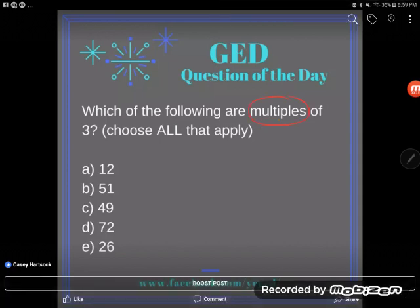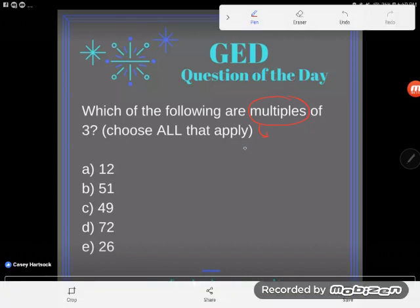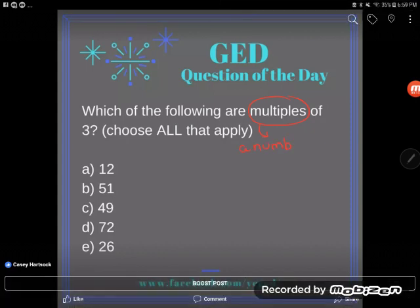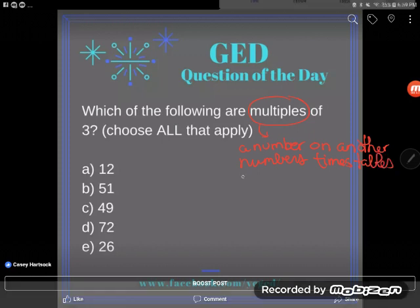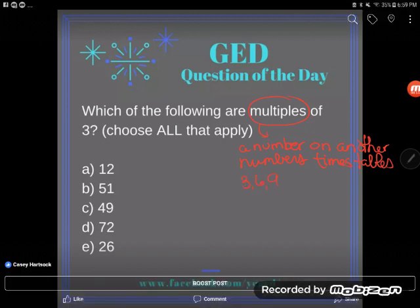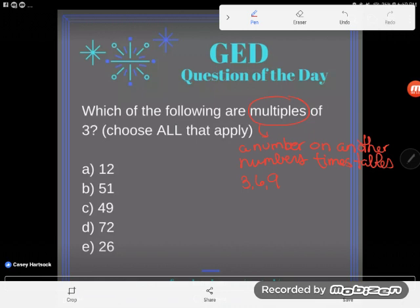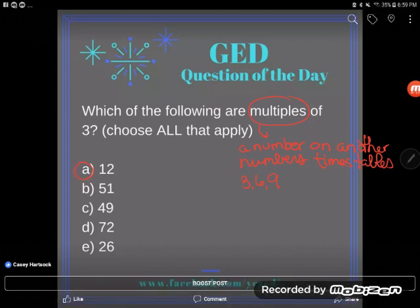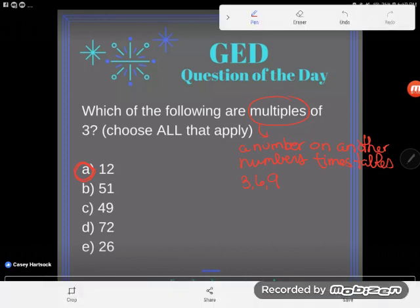First you've got to understand what a multiple is. A multiple is a number on another number's times tables. If I'm talking about multiples of three, I'm talking about numbers on the three times tables: three, six, nine, twelve, up to at least three times ten which is thirty. If you have them memorized up that far, that could help you know that twelve is a multiple of three, but it won't help you with the larger numbers.